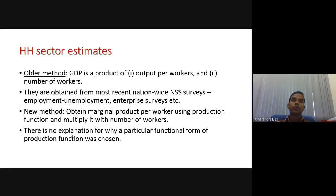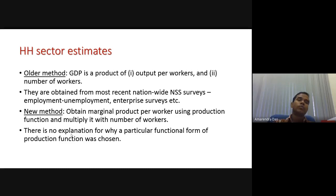In the older method, we used output per worker based on the NSS survey and then multiplied the output. But in the new method, we are using the production function approach to get productivity — marginal productivity derived from the production function — and multiply by the number of people in the working age group. This new method is also controversial.